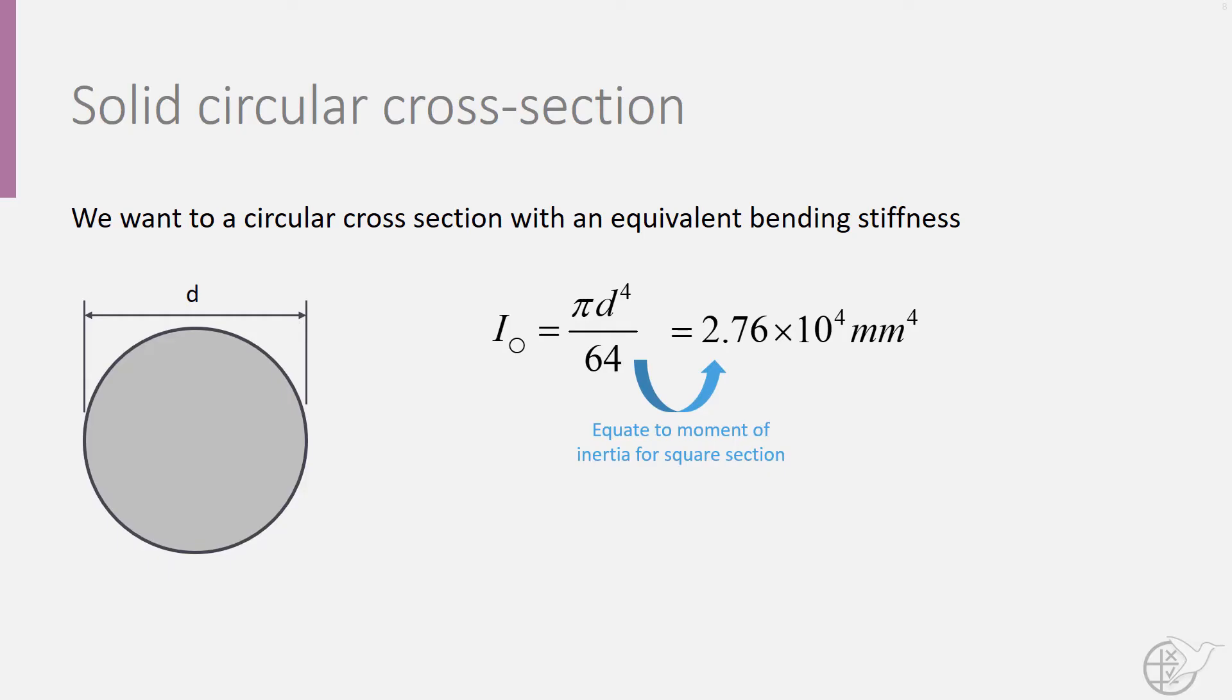we can calculate that a solid circular cross-section with a radius of 27.4 mm will have the same stiffness as the square cross-section.